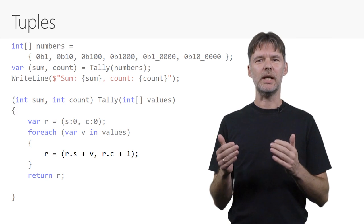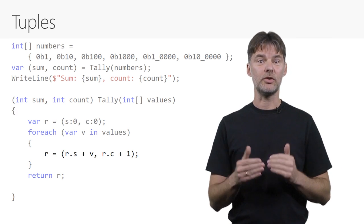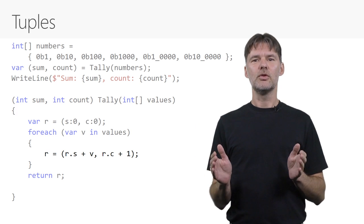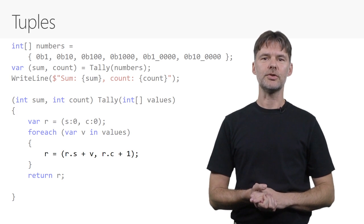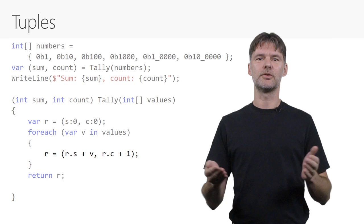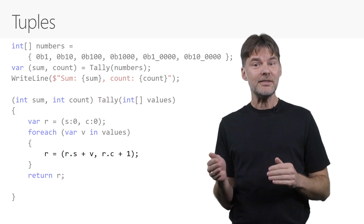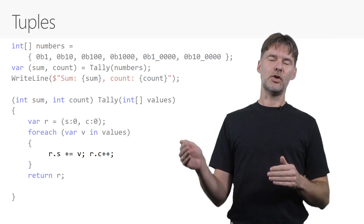There's no need to be concerned that creating new tuples like this all the time costs a lot of allocation. Tuples are structs, that is, value types, so they are created locally and are passed by copying the contents. Tuples are in fact mutable, and the elements are simply public mutable fields. So if I want, I can instead update r by first updating the s field and then incrementing the c field.